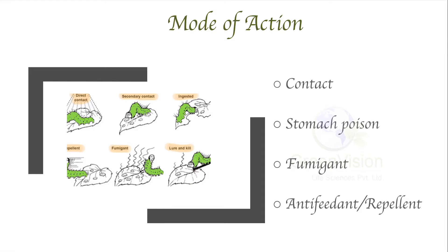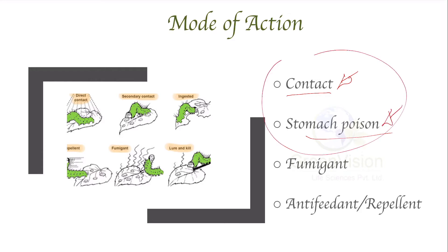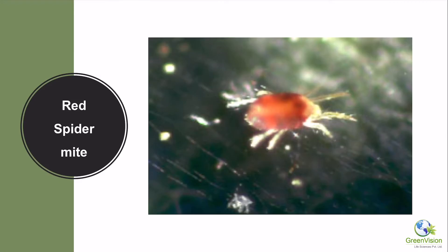The mode of action of MM-Pact is majorly contact action and stomach poison. If MM-Pact comes in contact with an insect, or if a surface treated with MM-Pact is consumed by an insect, it kills the insect immediately. Contact poison and stomach poison are the two major modes of action. Apart from that, there is also slight fumigant, antifeedant, and repellent action.